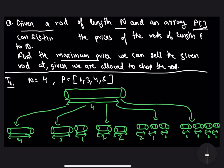Let's understand the problem with the help of a test case. We are given a rod of size N equals 4, and the prices of rods of length 1, 2, 3, and 4 are 1, 3, 4, and 5 respectively. We have to find the maximum price we can sell this rod of length 4 at. So P1 = 1, P2 = 3, P3 = 4, and P4 = 5.